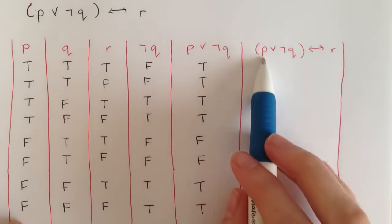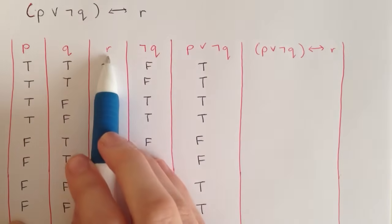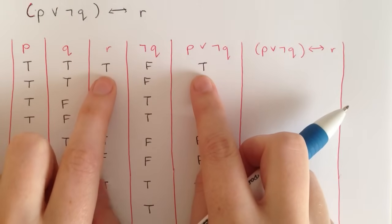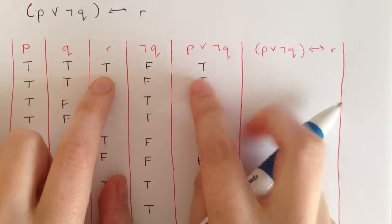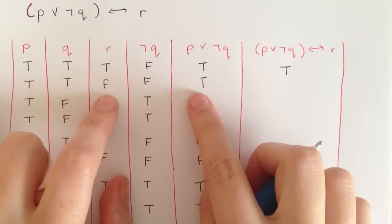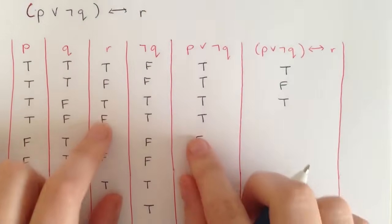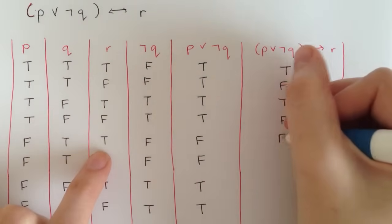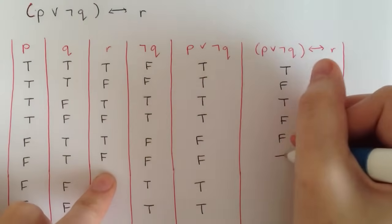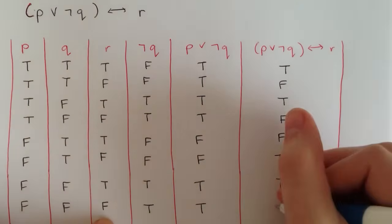Now the last column: p or not q, if and only if r. For a biconditional we just want a double true or a double false — anything else is false. True and true — true. True and false — false. True and true — true. True and false — false. False and true — false. False and false — true. True and true — true. True and false — false.